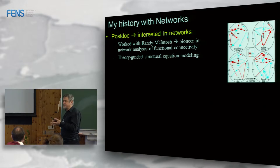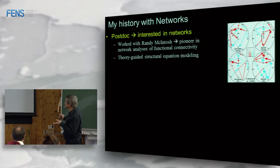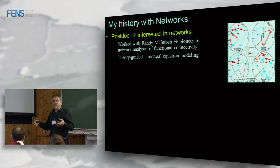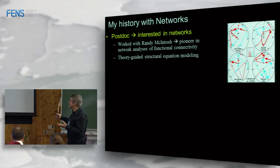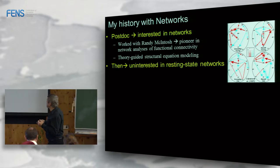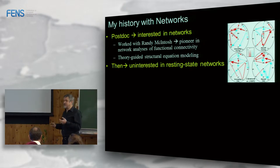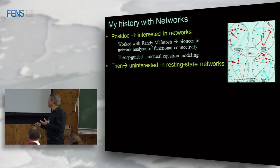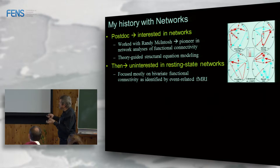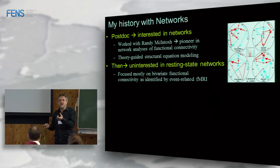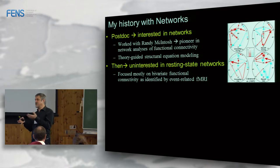At that time, structural equation modeling was primarily theory-guided — for example, looking at aging effects and how bilateral recruitment in older adults interacted across hemispheres. Then I became less interested in resting-state networks for a couple of reasons. I kept doing connectivity but primarily bivariate connectivity — for example, between the hippocampus and frontal lobes, or hippocampus and parietal cortex.